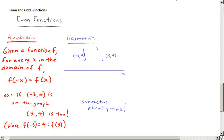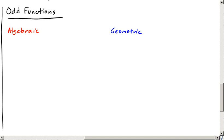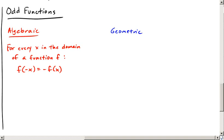So again, with odd functions, we'll take the same approach. We're going to use an algebraic and a geometric way to explain what's happening. And we have, for every x in the domain of some function f, that f of negative x equals the opposite of f of x. So basically, this is what's happening for every single point.